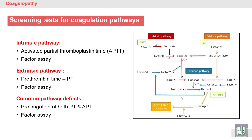Screening tests for coagulation: for the intrinsic pathway we have the activated partial thromboplastin time (aPTT). If we find prolongation of the aPTT, we have to check factors in the intrinsic pathway, such as factor 11, factor 9, and factor 8.